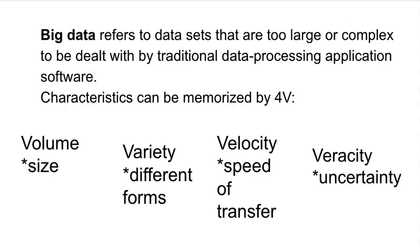There are four characteristics of big data. First, volume — it is a huge amount of information. Second, velocity — big data often arrives at a high velocity, with data being generated in real time or near real time, for example social media feeds and online transactions. Third, veracity — this refers to the reliability and quality of the data. Big data is often characterized by data uncertainty, inconsistency and incompleteness.